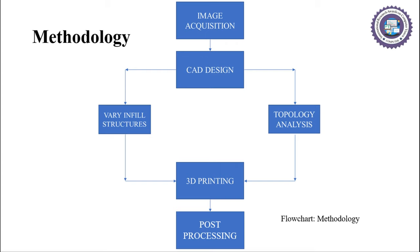Methodology: Image acquisition is the first step. The act of retrieving a picture from an external source for subsequent processing is known as image acquisition, and it is the initial stage in every image processing system. The next step is CAD design. Once the image is acquired, a 3D model is to be developed using images captured by the scanner. This design should be customized according to the patient so as to achieve good fit and comfort.